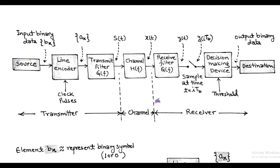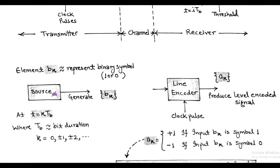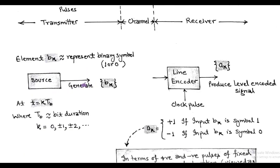Now we discuss this baseband binary transmission system in brief. Initially, the source generates an input binary data sequence b_k, at the sampling instant t equals k·T_b, where T_b is the bit duration.